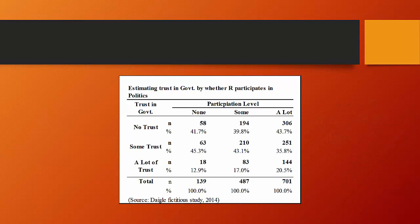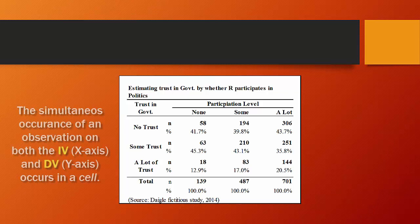Each observation will have a value on each variable, the independent and dependent variable, and the simultaneous occurrence of both values in such an array for any one observation will be located within a cell.